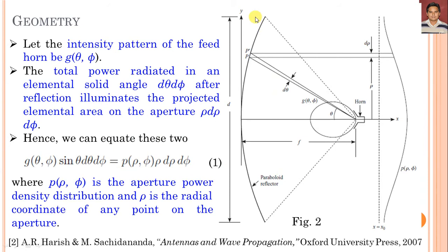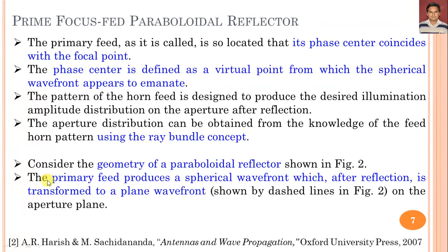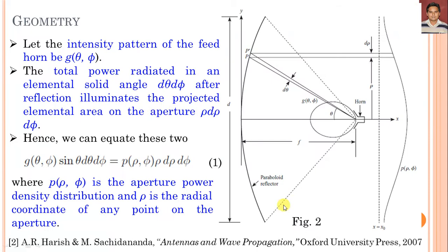The primary feed produces spherical wavefronts which, after reflection, are transformed into a plane wavefront. Let the intensity pattern of the feed horn be G(θ, φ). The total power radiated in any elemental solid angle dθ·dφ, after reflection, illuminates the projected elemental area on the aperture ρ·dρ·dφ.